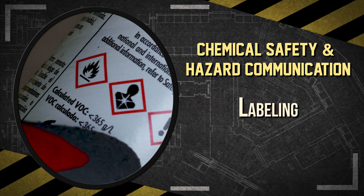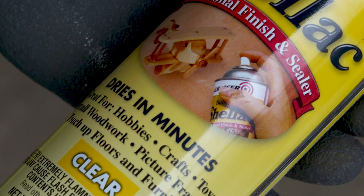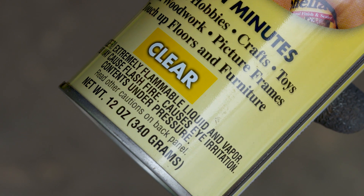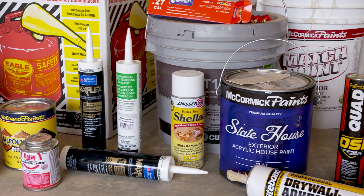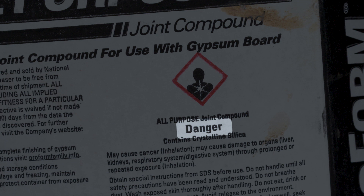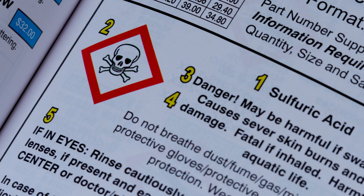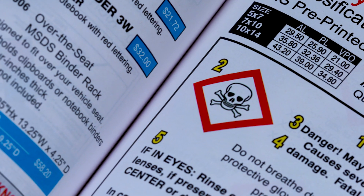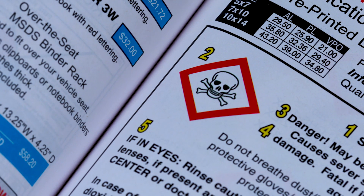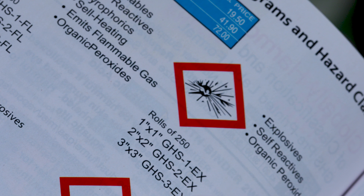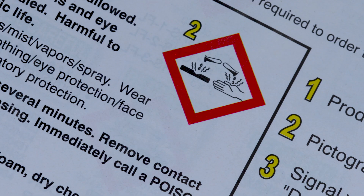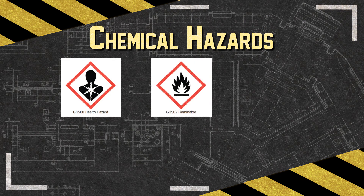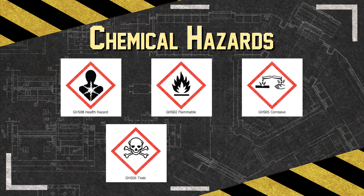Labels provide an immediate warning of hazards. Product manufacturers are required to provide labels on all shipped containers with information including product identifier or product name, signal words like danger or warning, hazard statements like fatal if inhaled, and hazard pictograms that alert users of the chemical hazards to which they may be exposed. Each pictogram consists of a symbol on a white background framed within a red border, and represents a distinct hazard such as a health hazard, flammable, corrosive, toxic, and irritant.